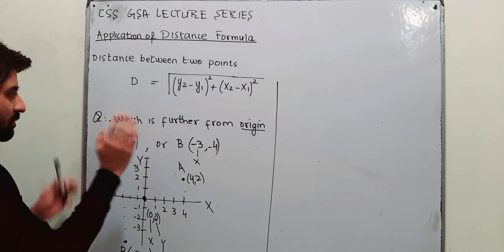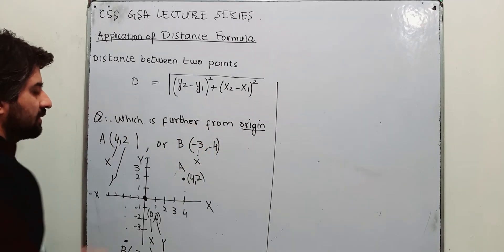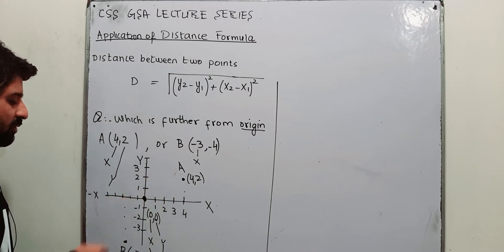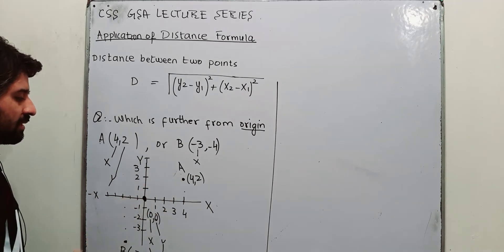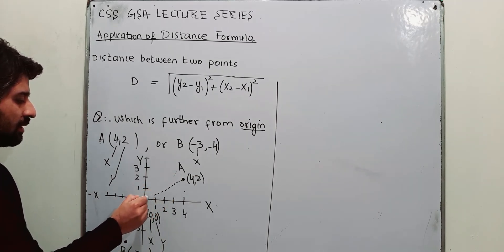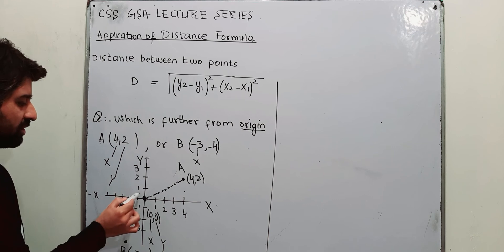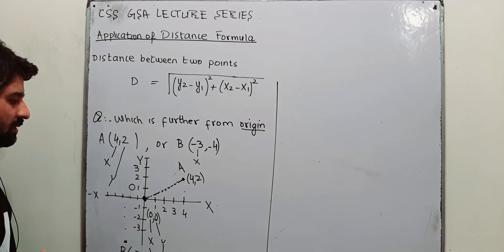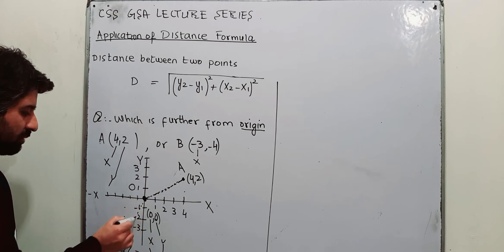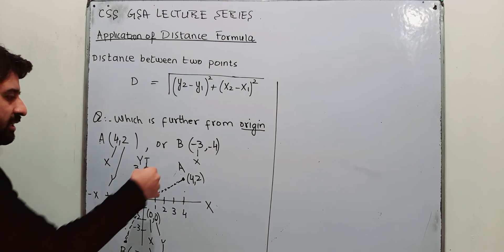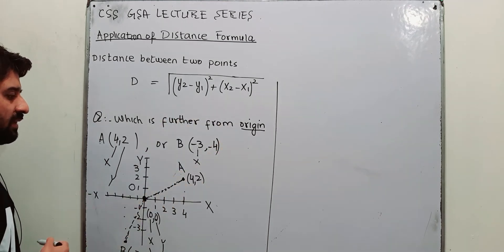Now how to find the distance? The question is which is further from origin? Point A is more far away from origin or point B is at more distance from your origin? So first of all you need to find the distance between origin and A. You need to find this distance, and then this distance, OA. Origin is represented by O. So OA is more or origin to B is more? This is OB. Which one is more? Which point is further from the origin?